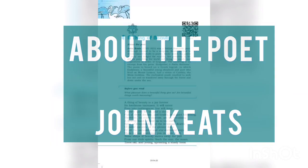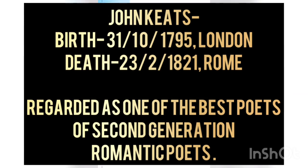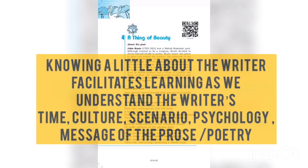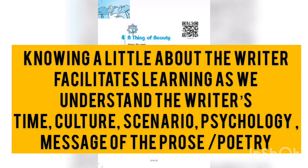John Keats was born in London, Great Britain, and he died of tuberculosis in Rome in 1821. We don't dwell too much on the poet's biography because detailed biographical questions don't typically appear in the board exam, so we'll keep it brief. However, it is good to know a little about the author or poet because it helps you understand the message of the poem or prose better.